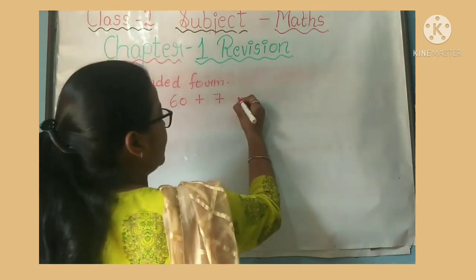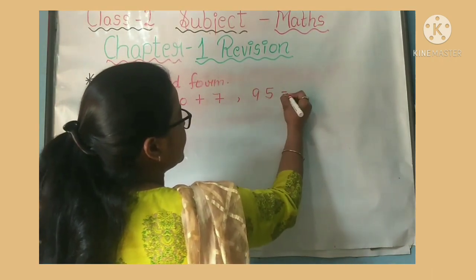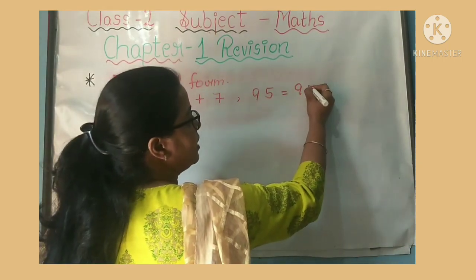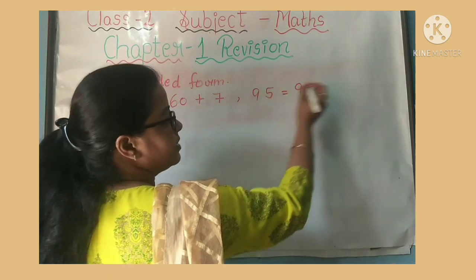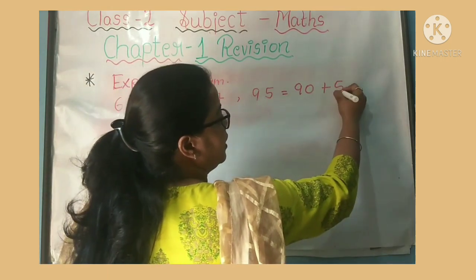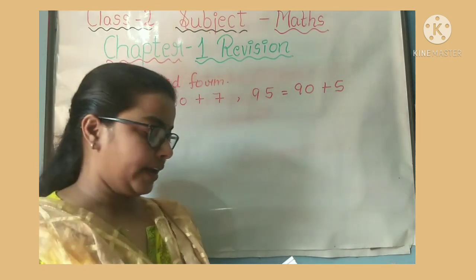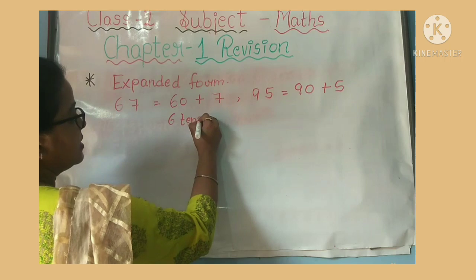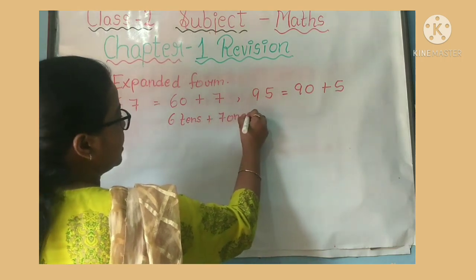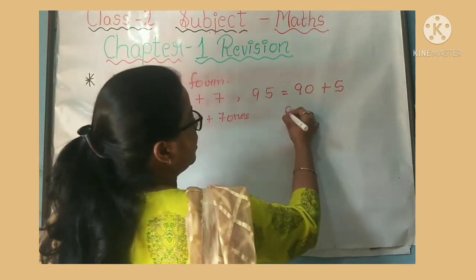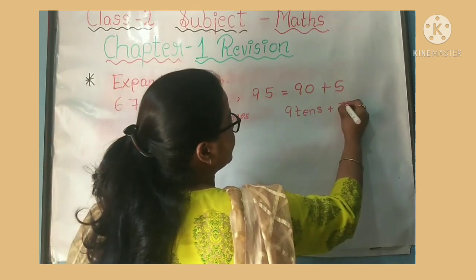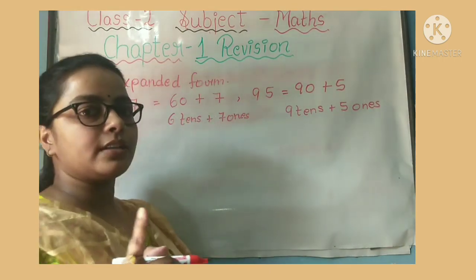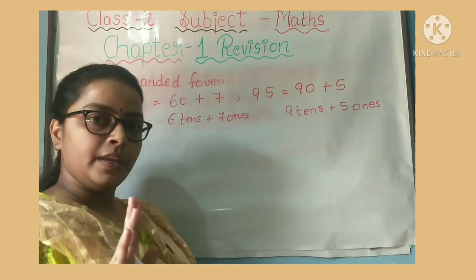One more question: 95 is given. How do we do it? In 95 — 90 (nine followed by one zero) plus five — one zero is added. So we have written it in expanded form. So 67 = 6 tens + 7 ones, and 95 = 9 tens + 5 ones. In tens, one zero is added; in ones, no zero is added. Clear. When hundreds come — when we study three-digit numbers — two zeros are added.